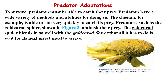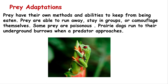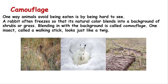Prey also have their own methods and abilities to keep from being eaten. Prey adaptations include running away — for example, a deer running from a cheetah — staying in groups, or camouflaging themselves. Some prey are poisonous, like certain snakes or frogs. Prey can also hide underground. Camouflage is one way animals avoid being eaten — for example, a rabbit that is very hard to see, or an insect that looks like a piece of wood.